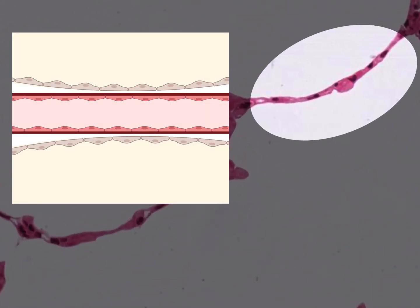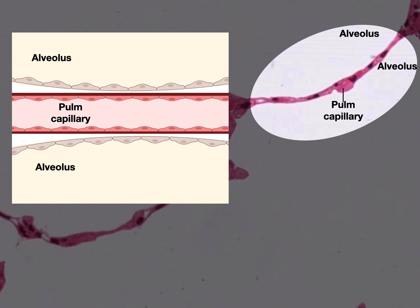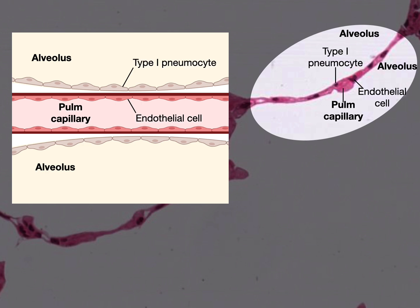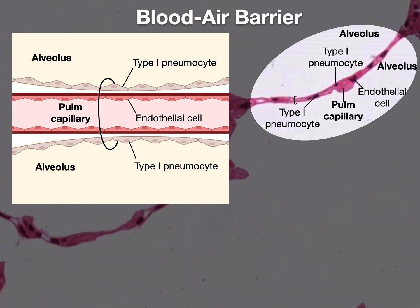Looking more closely at the light micrograph: the alveolus above and an alveolus below, with a pulmonary capillary between them — an endothelial cell and a type 1 pneumocyte for the alveolus above and a type 1 pneumocyte of the alveolus below. The blood-air barrier is just the alveolus and its associated pulmonary capillary — showing just how thin that barrier really is.